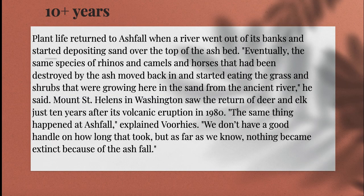Ten plus years later, plant life returned to Ashfall when a river went out of its banks and started depositing sand over the top of the ash bed. Eventually, the same species of rhinos, camels, and horses that had been destroyed by the ash moved back in and started eating the grass and shrubs growing there. Mount St. Helens in Washington saw the return of deer and elk just 10 years after its volcanic eruption in 1980 — interesting reading if you want to investigate that. The same thing happened at Ashfall. As far as we know, nothing became extinct because of the ash fall.